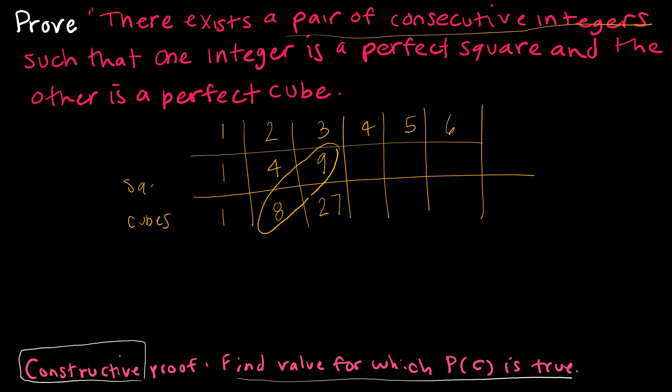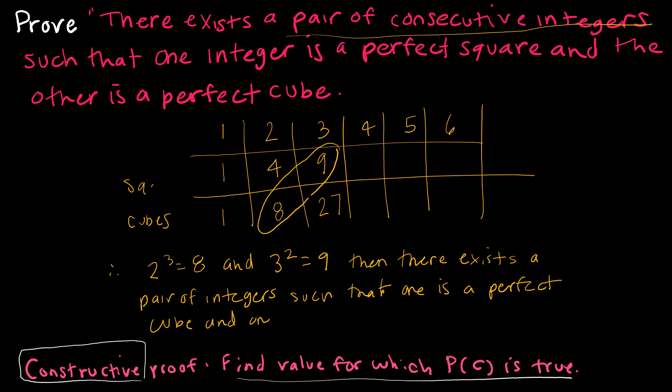I have shown, not in a very mathy or scientific way, I've just done the math to find out that the pair of numbers, since two cubed equals eight and three squared equals nine, then there exists a pair of integers such that one is a perfect cube and one is a perfect square. All I had to do was show that I could find one. Proof of existence by a constructive proof.